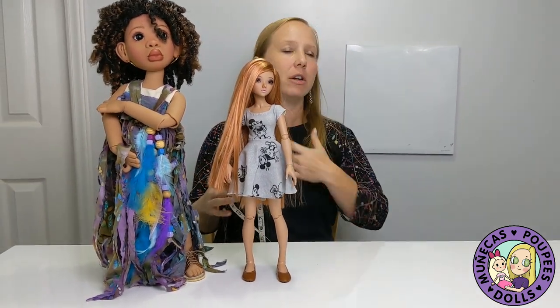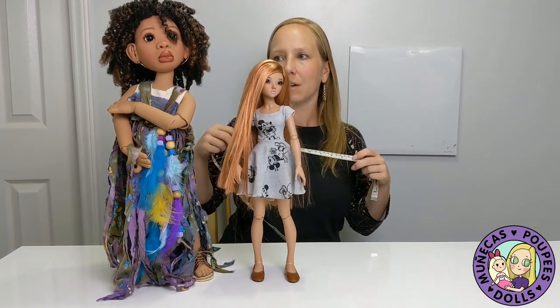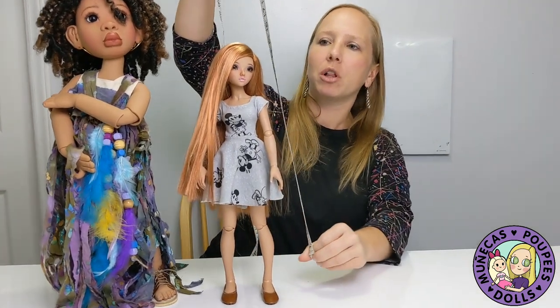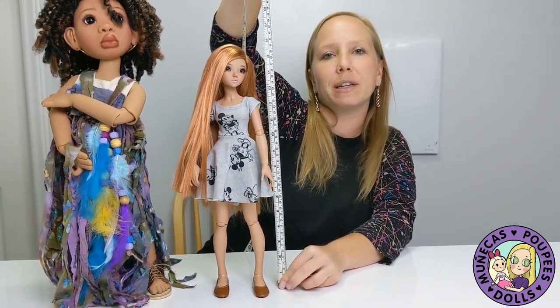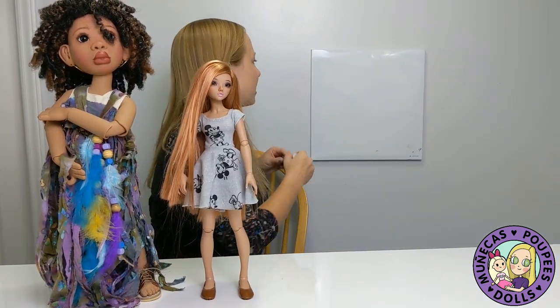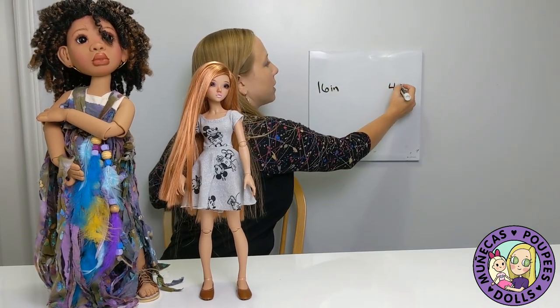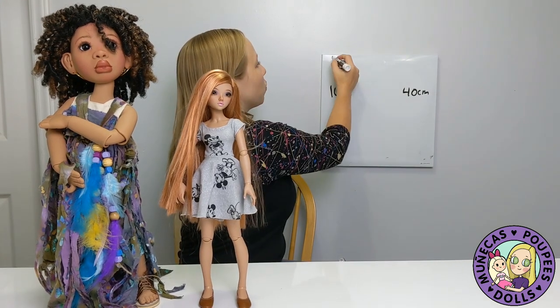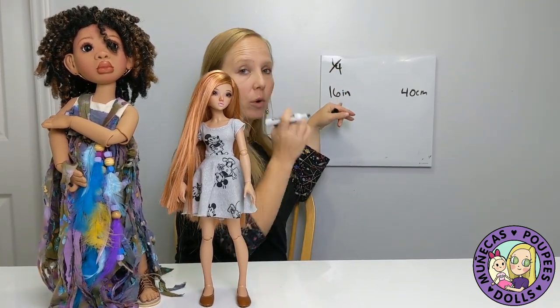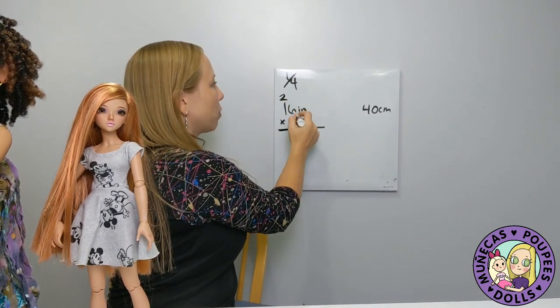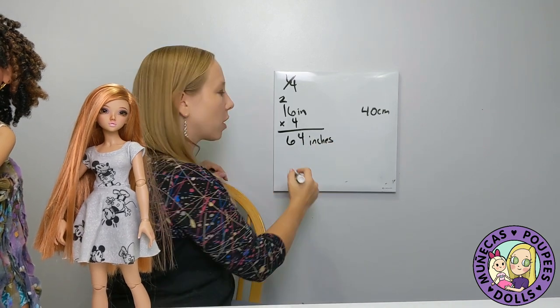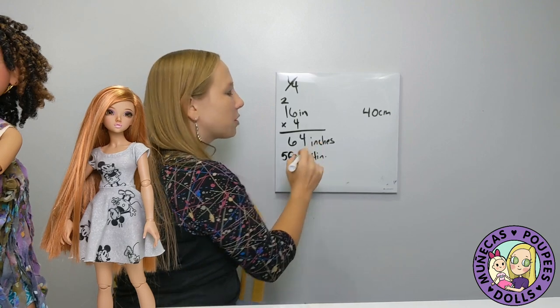Now let's move on to our more adult dolls: the 1/4 scale. These vary greatly across doll makers. I'll start with Chloe — many feet Chloe — at about 16 inches, or 40 centimeters. In 1/4 scale: 16 times 4 — six times four is 24, four times four is 16 — she'd be 64 inches, or five feet four inches tall.